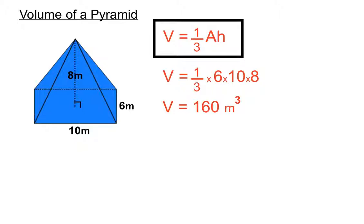Alright, that's substituting in the area of the base there. The area of the base was the 6 by 10 bit. That's where we got those two. And the perpendicular height was the 8. The one third was in the formula anyway.